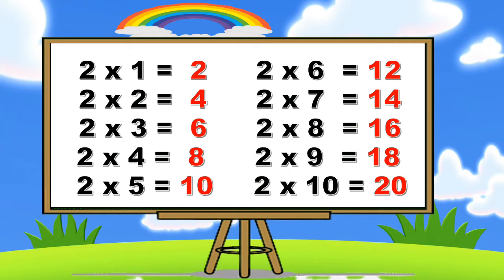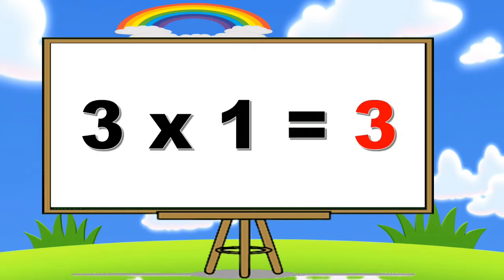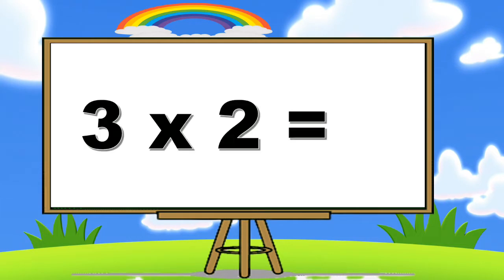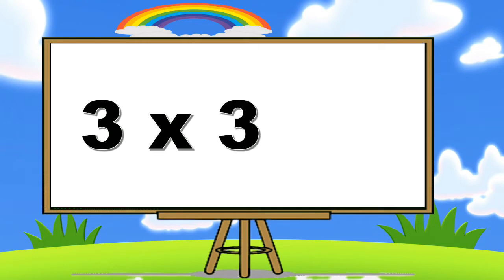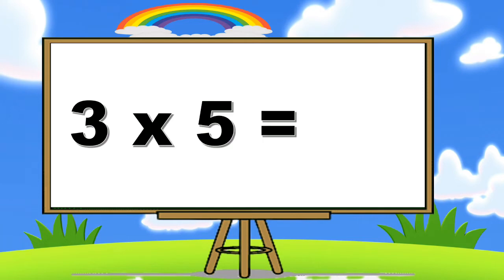Bye friends! Table of three. Three ones are three. Three twos are six. Three threes are nine. Three fours are twelve. Three fives are fifteen. Three sixes are eighteen.